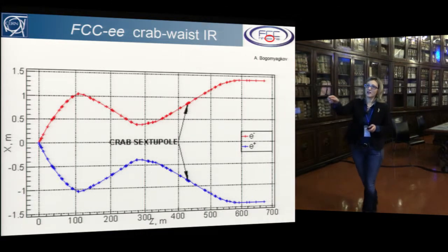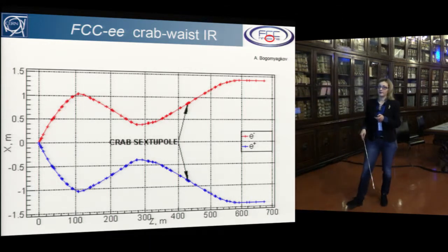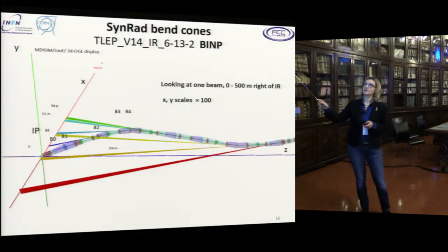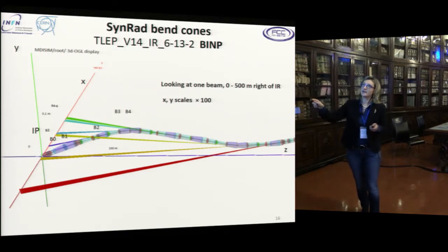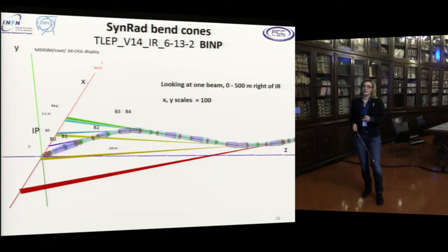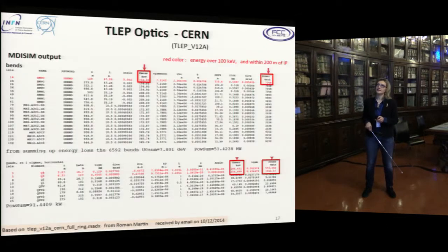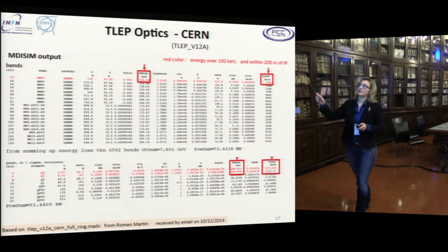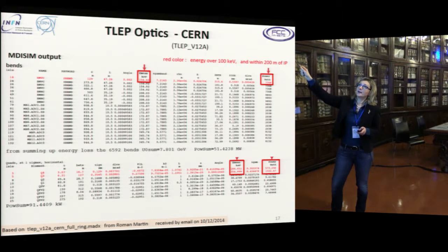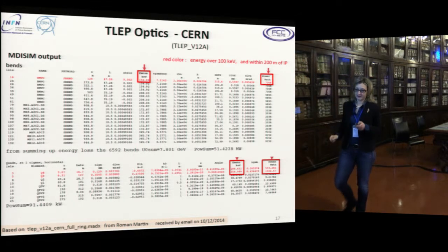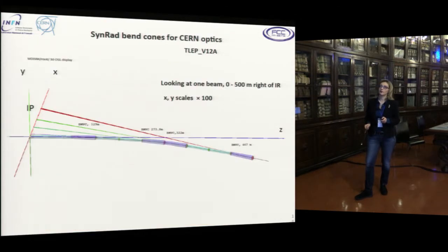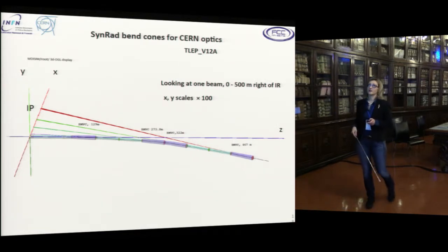Starting from this feedback, Anton produced a new lattice and we will see how it works. This shows the trajectories at the IP, both horizontal and in the machine, and how the synchrotron radiation fans look starting from the IP — this is the starting point from which work has to be done on the lattice. The crab waist optics has been compared to the more conventional CERN optics. In the conventional design, only the first dipole has a critical and mean energy above 100 keV — which looked better from the synchrotron radiation point of view, and these are the resulting radiation fans.